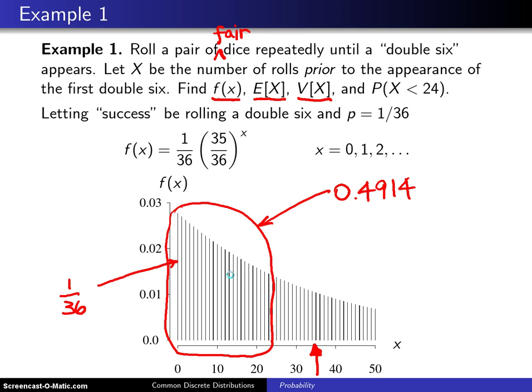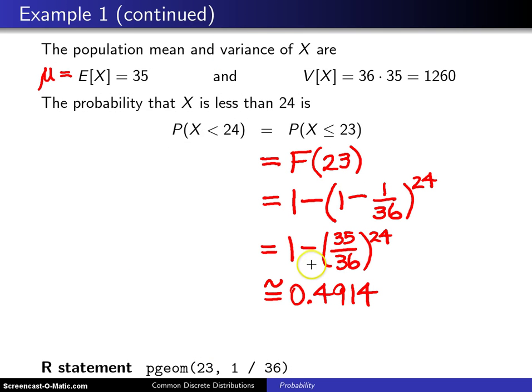Now finally, down at the bottom of the next page, if you wanted to calculate this quickly—that is, what if I want the CDF of a geometric random variable with p equals 1/36 evaluated at 23—you would put in pgeom. If you remember, this first letter p indicates that you want the CDF, and of course the geom corresponds to a geometric random variable. You put in the x value, which is 23, and you put in the p value, which is 1/36, and this will return 0.4914. So that's how it is done in R.